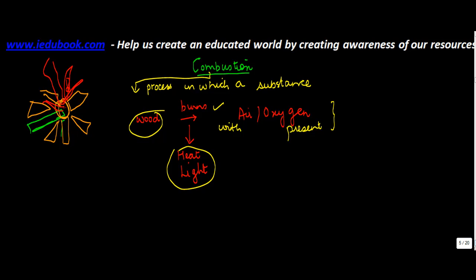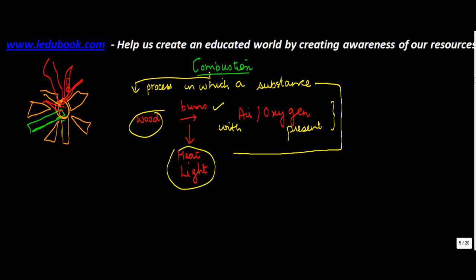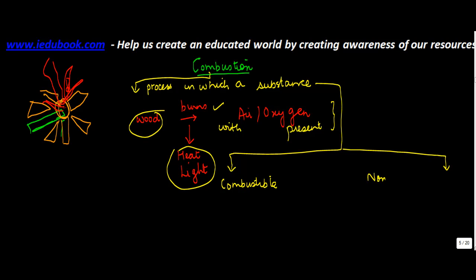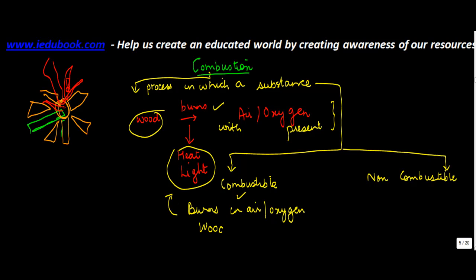Now substances can be classified into two categories when looked at in terms of their ability to burn. One is basically your combustible and the other one is non-combustible. So a combustible substance is a substance which burns in air and oxygen to produce heat and light. For example, wood, oil, kerosene, paper, etc.